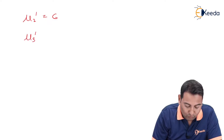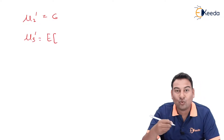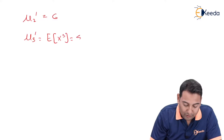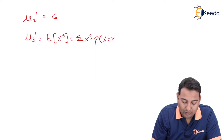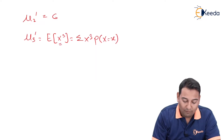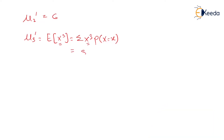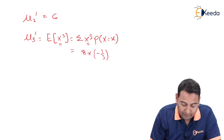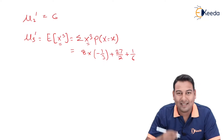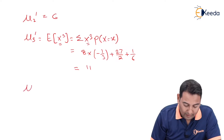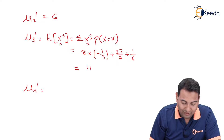The third case is mu three dash, which is the expectation of x cubed — summation of x cubed into p of x. Substituting the values, that will be negative eight into one-third, plus twenty-seven into one-half, plus one into one-sixth. If you simplify, you will get the answer as eleven. So mu three dash is equal to eleven.